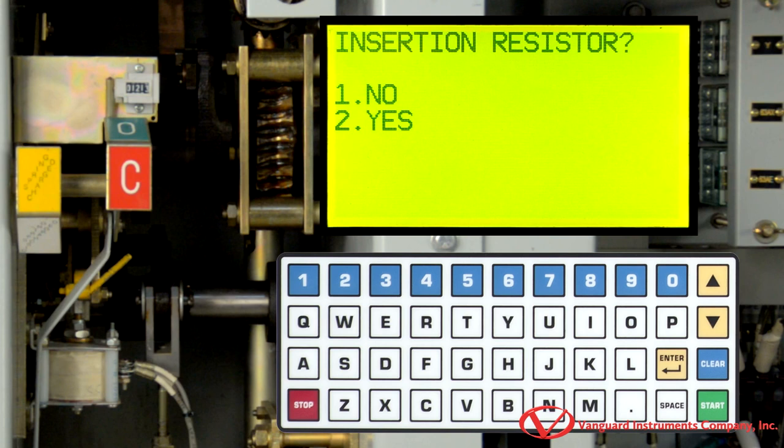On this screen, we are going to select whether there is an insertion resistor or not, and for this example, we will press 1 for no.